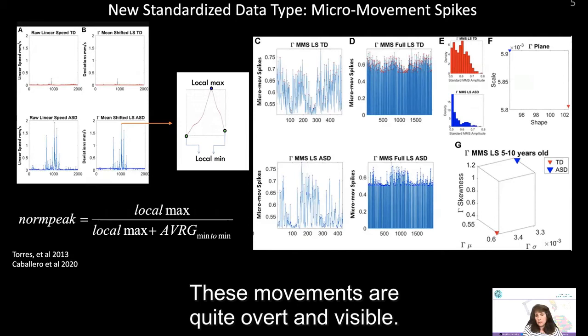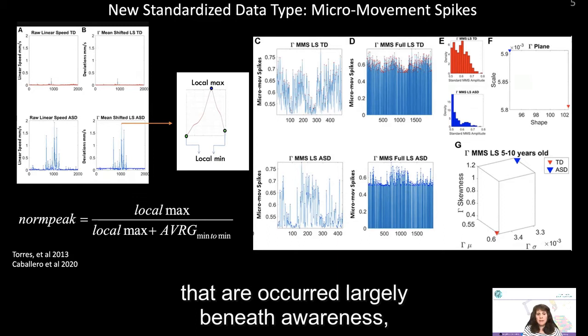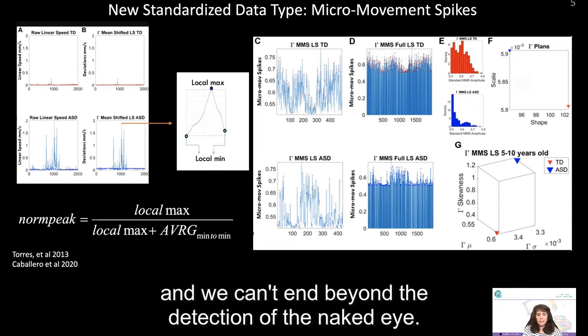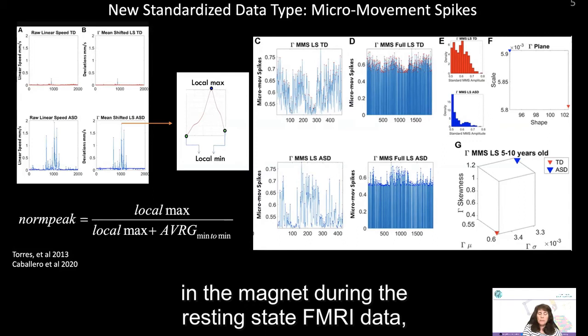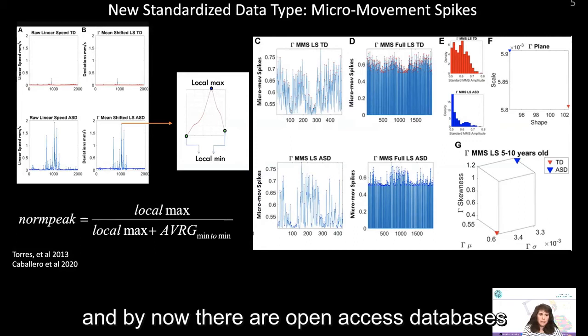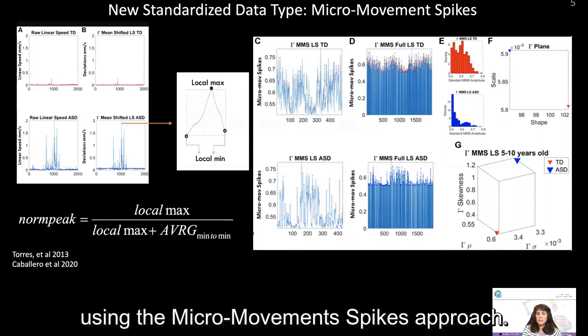These movements are quite overt and visible, but there are also a family of movements that occur largely beneath awareness, beyond the detection of the naked eye. One example occurs when people try to curtail their movements during the resting state of fMRI data, for which there are now open access databases available for analysis. In resting state there is quite a lot of involuntary motion that we can also analyze using the micro movement spikes approach. For example, we can take a neurotypical child and an autistic child and see profound differences in the amount of motion their bodies output.